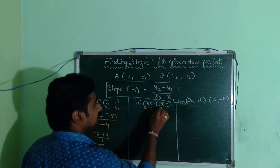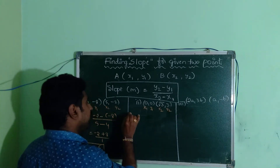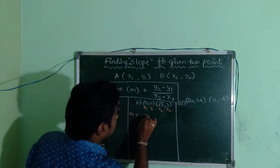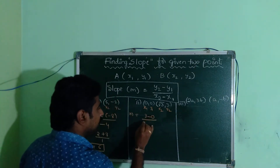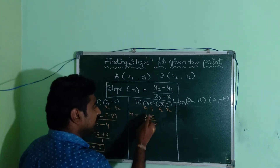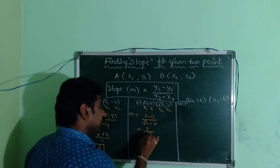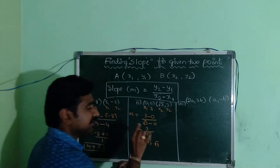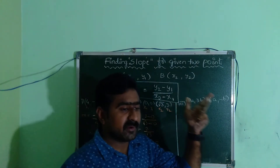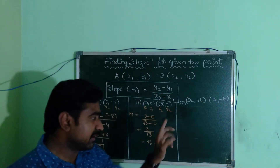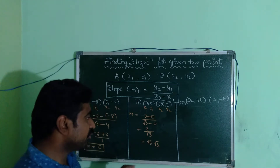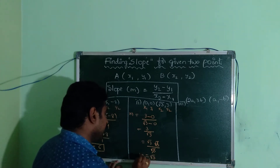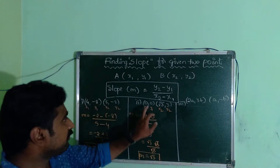For the second example, we find the slope using y2 minus y1 by x2 minus x1. Here y2 is 3, y1 is 0, x2 is root 3, and x1 is 0. So we get 3 by root 3, which simplifies to root 3 into root 3 divided by root 3, giving us m is equal to root 3. Root 3 is the slope for the given two points.